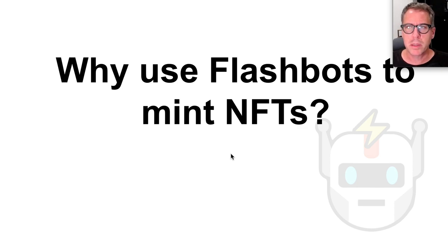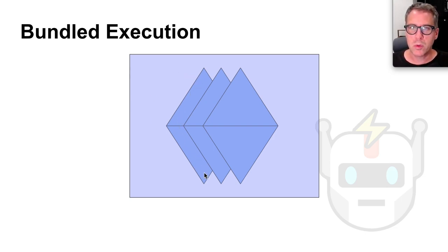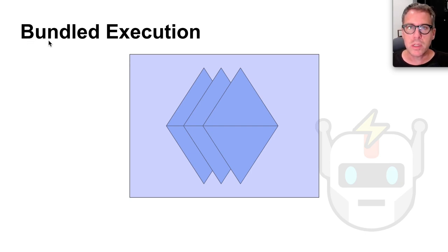So why would you use Flashbots to mint NFTs? Many of the NFT minting systems have restrictions preventing smart contracts from participating in these sales. In Part 2, one of the things we wanted to do was mint an NFT before selling it, and we would like to do that in the exact same block. We do not want to be holding this NFT while somebody else fills the order. We really would like to buy and sell in the exact same block and not maintain any price exposure. Using bundled execution, we can have multiple things happen in the same block, even when the components we're acting with do not allow contract interactions.